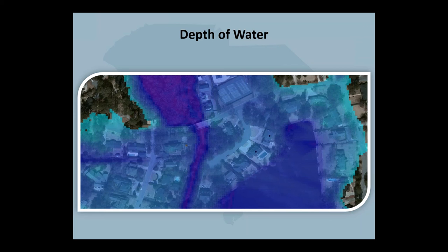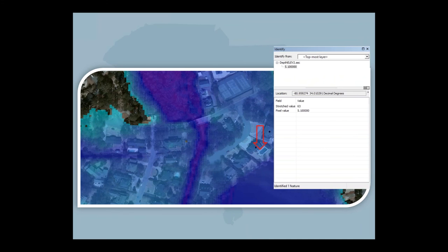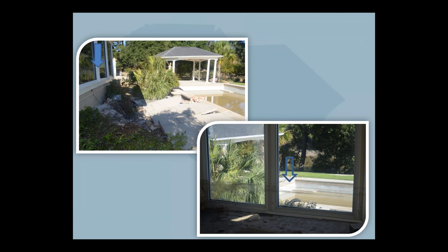When using these depth grids, you can relate to a citizen how deep the water will be when they step out of their front door. If you have floor elevations for a structure, you can indicate how deep the water will be inside the building. You can see at this particular point the depth is 5.1 feet. We were able to go out to this structure and take photographs, and as you can see from where the water lines are indicated by the arrows, it is approximately five feet above the ground.